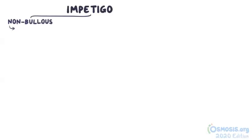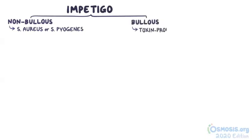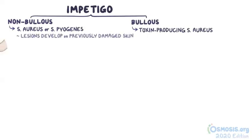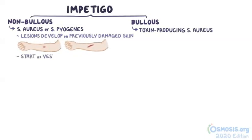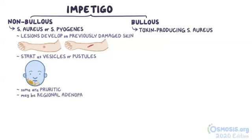Impetigo can be classified as non-bullous impetigo, which is usually caused by S. aureus or S. pyogenes, and bullous impetigo, which is caused by toxin-producing S. aureus. In non-bullous impetigo, the lesions develop on previously damaged skin by things like insect bites or abrasions, and they start as vesicles or pustules which evolve over about a week into gold-crusted plaques that are often about 2 cm in diameter. Some are pruritic, and there may be regional adenopathy.